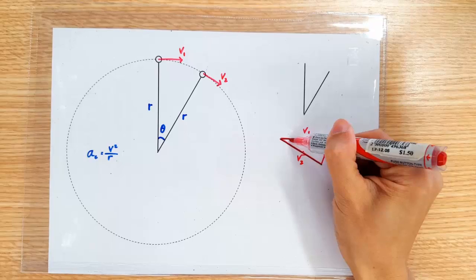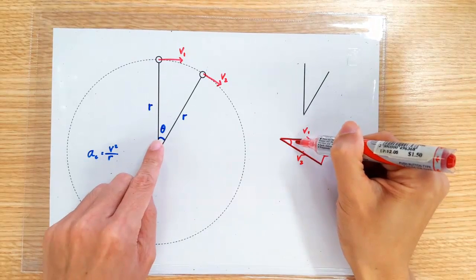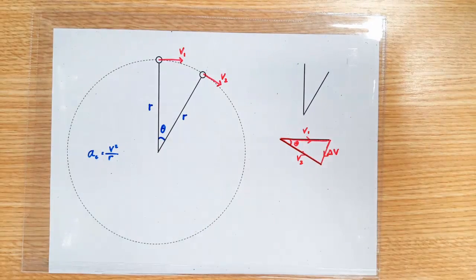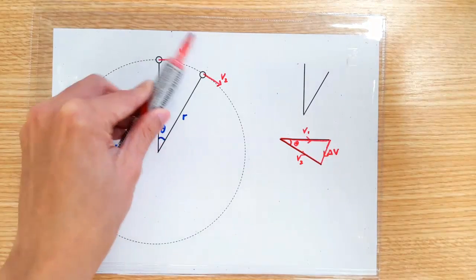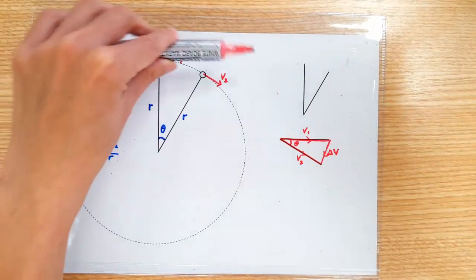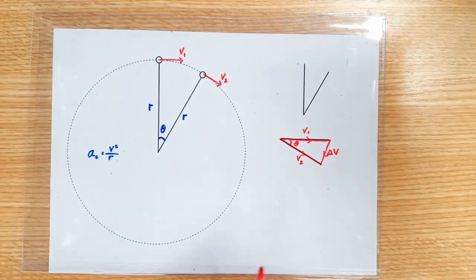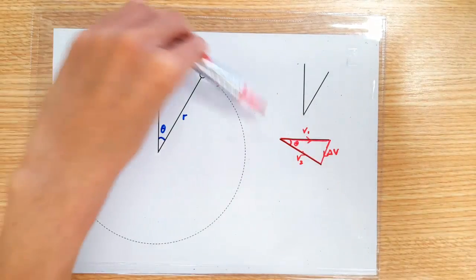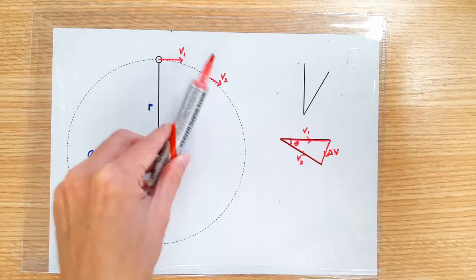Do you see that this angle here is actually the same angle theta here? See, r and r forms the angle theta. So, v1 and v2 should also form the angle theta, because v1 and v2 are just these two r's turned 90 degrees.